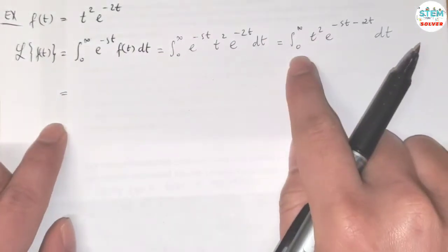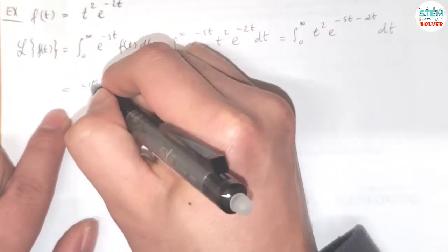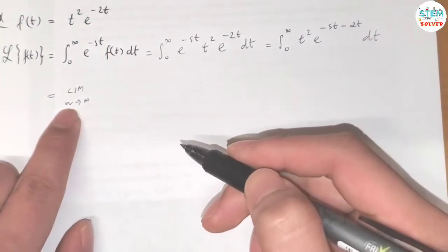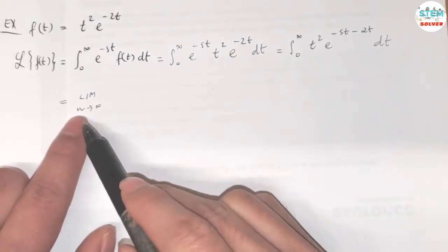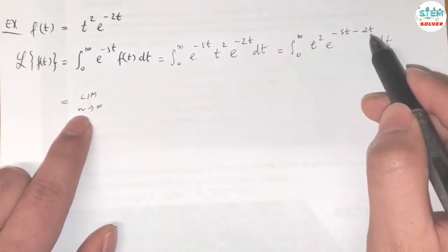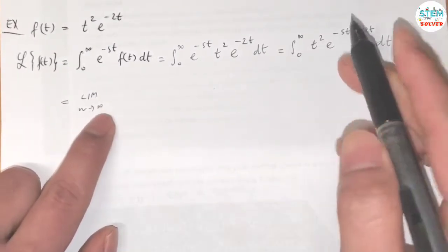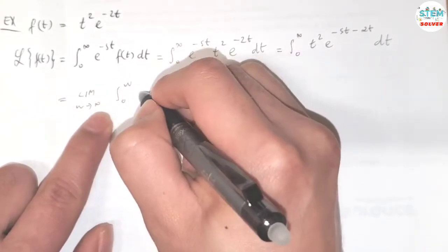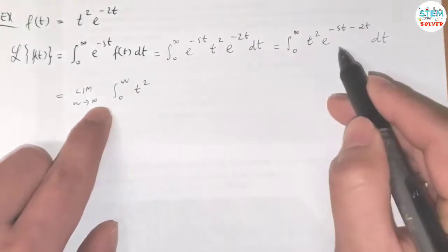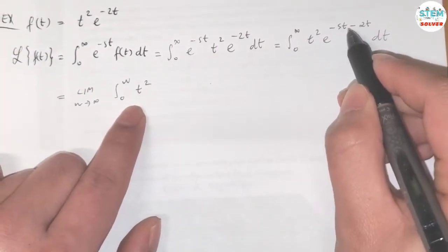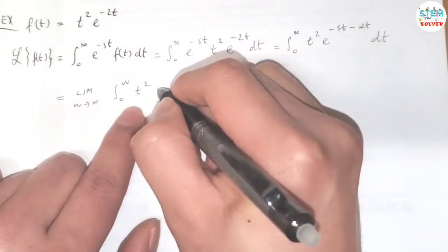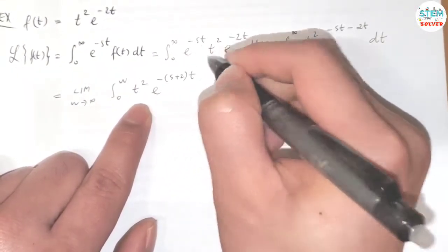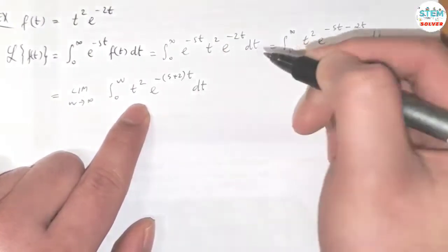Since we have an improper integral, we have to take a limit. As w goes to infinity — you can use whatever letter you like here as long as it's different from t — the integral from 0 to w of t squared times e to the negative s plus 2 times t, dt.